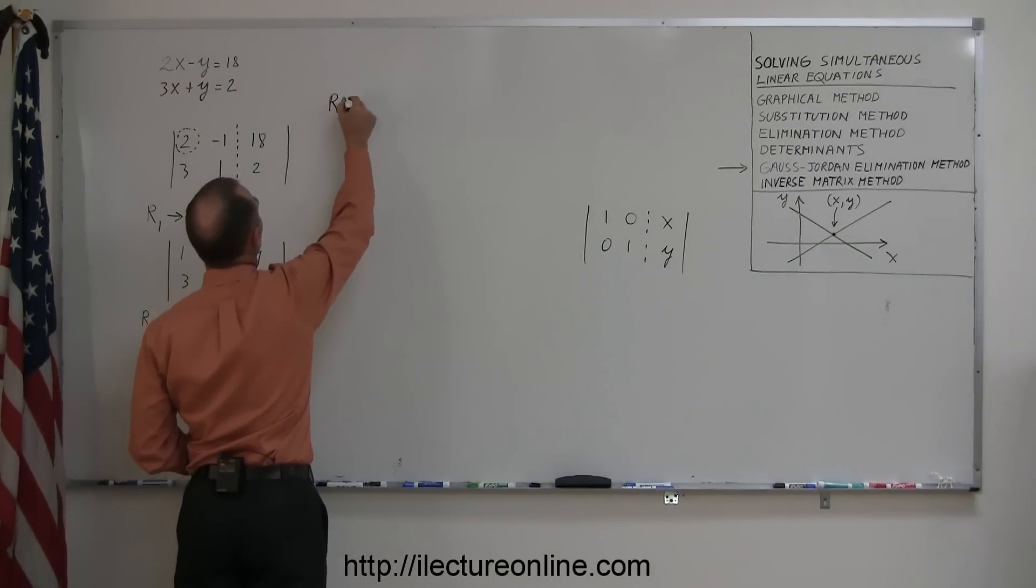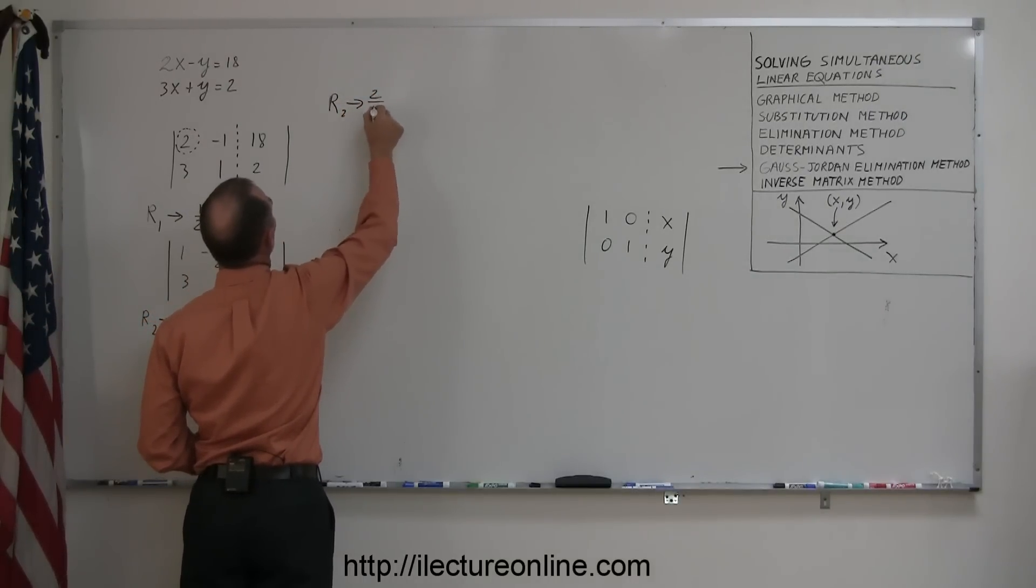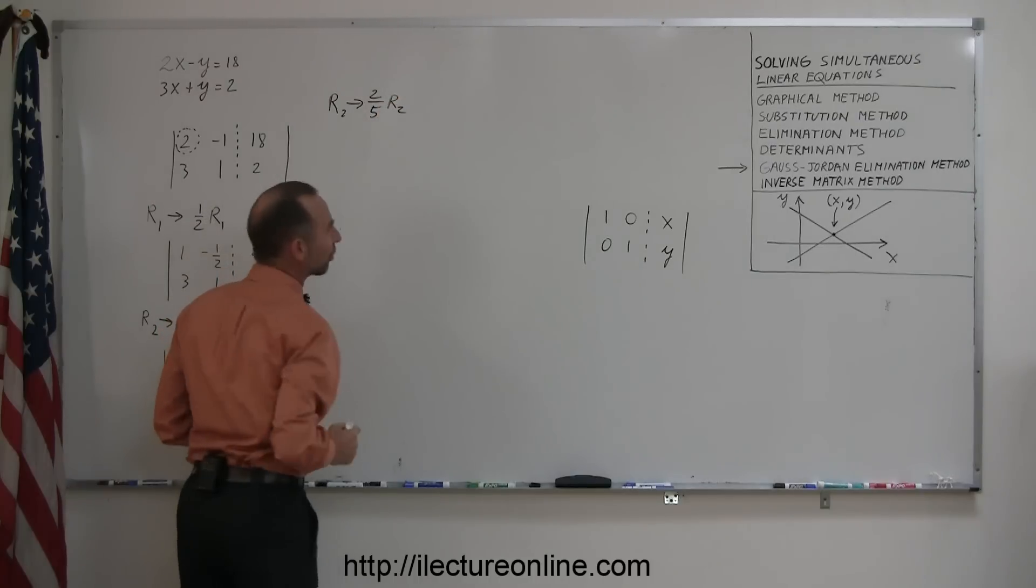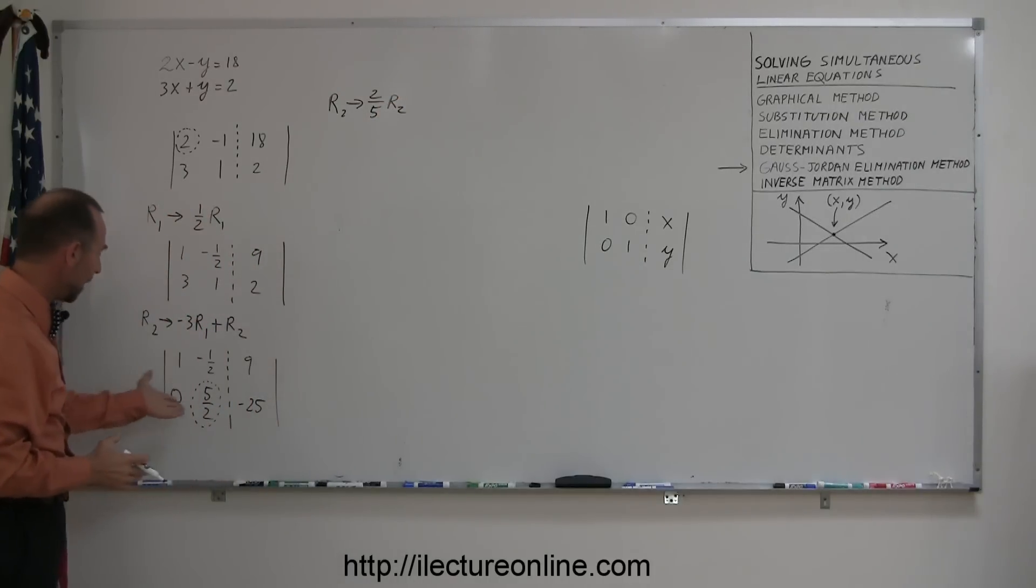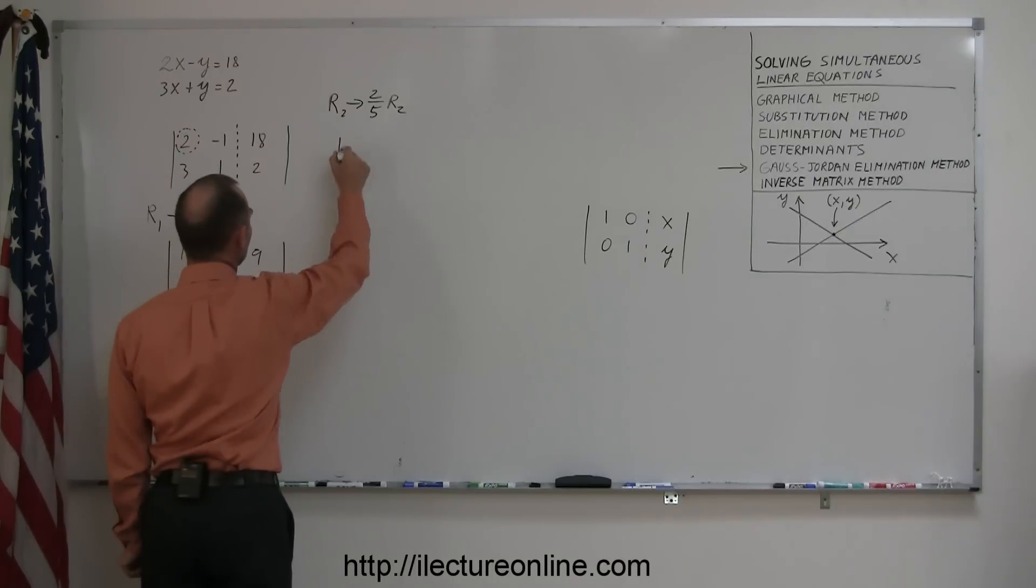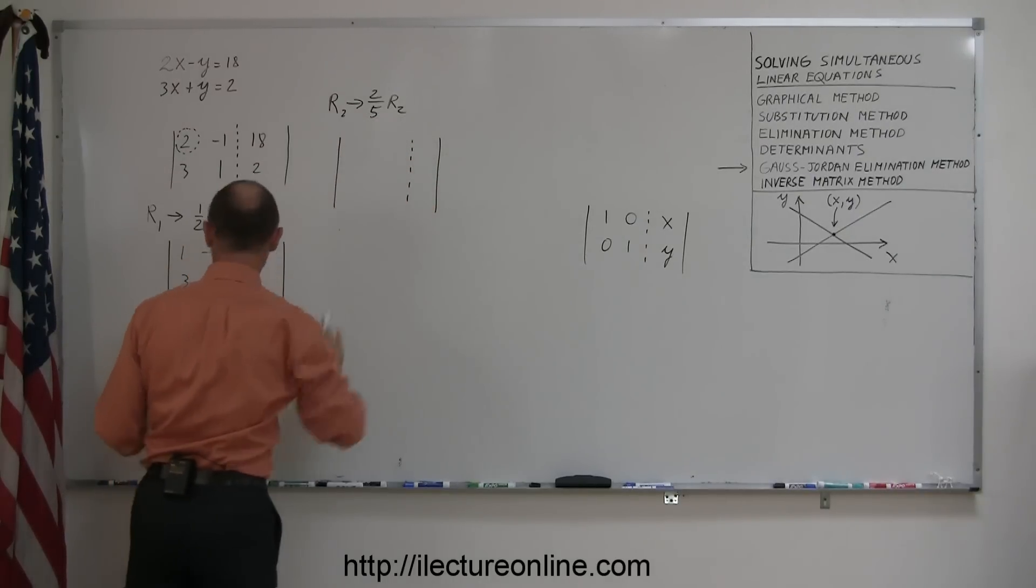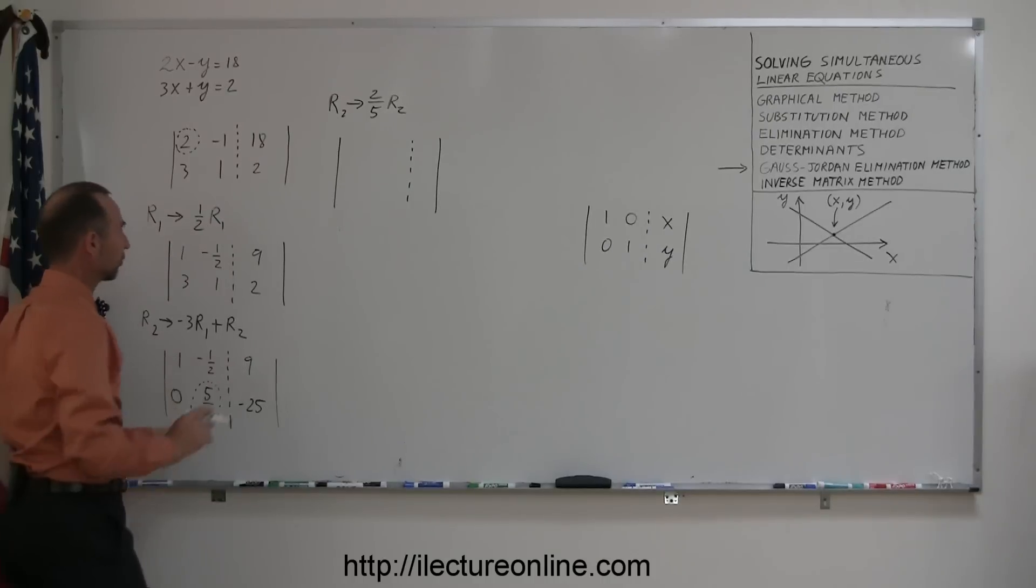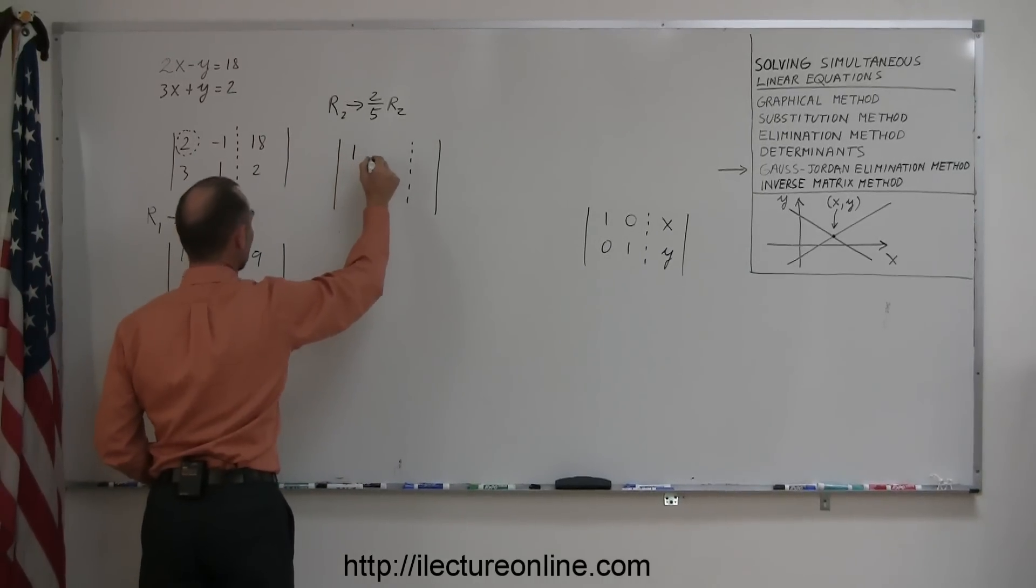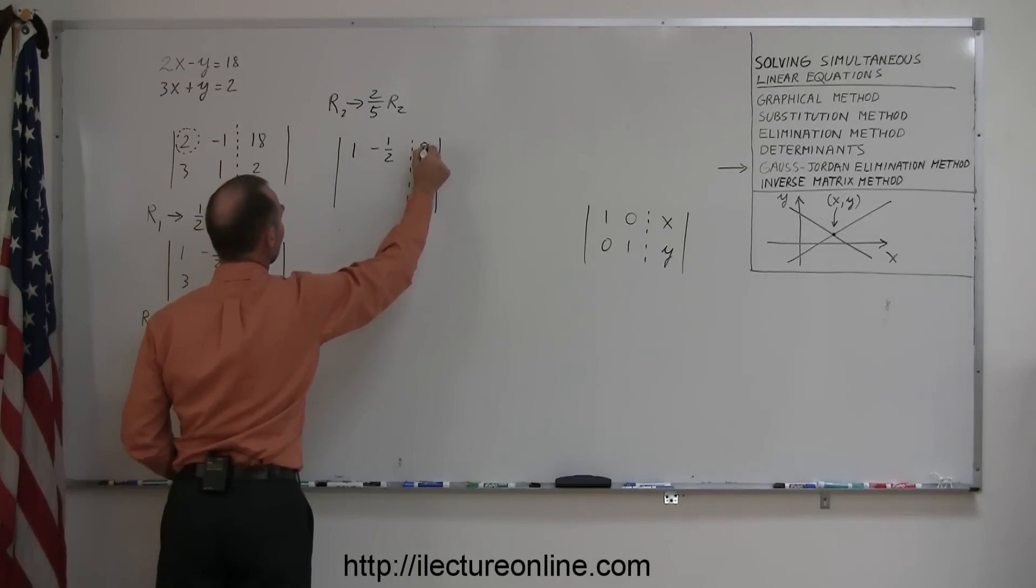So the technique is, take the second row and replace it by 2 fifths the second row. In other words, I'm multiplying the second row by 2 fifths. If I do that, I get the following. Notice, since I'm only changing the second row, nothing changes in the first row. So this stays as a 1, a negative 1 half, a positive 9. But here in the second row, of course, the 0 doesn't change.